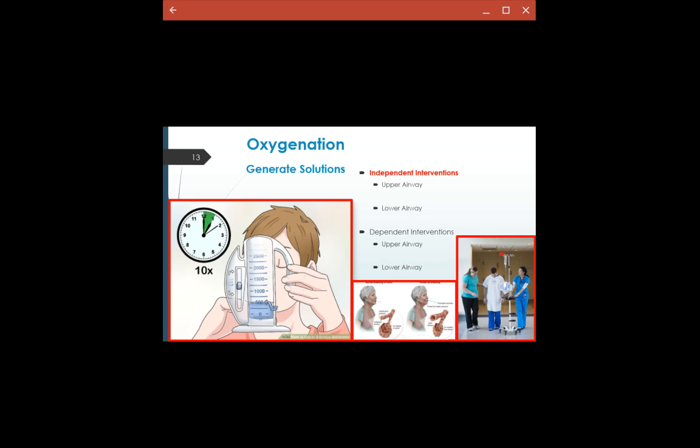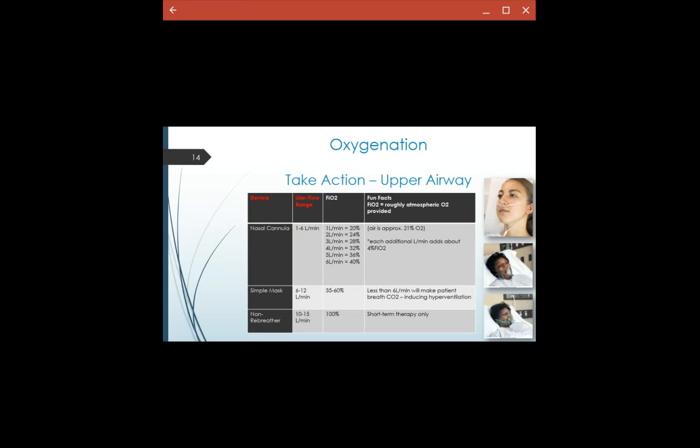And then we have our oxygen interventions. This is going to be our nasal cannula, from least invasive to most invasive. Our nasal cannula is going to be when we are using a little tube in the nares to deliver oxygen. So keep in mind that FiO2, that's roughly the amount of atmospheric O2 that's actually provided.